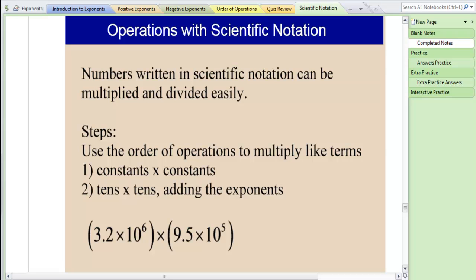So let's talk about some operations we can use once we write numbers using scientific notation. The reason we use scientific notation is to deal with really big and really small numbers, and we can perform operations without having to deal with all these zeros.